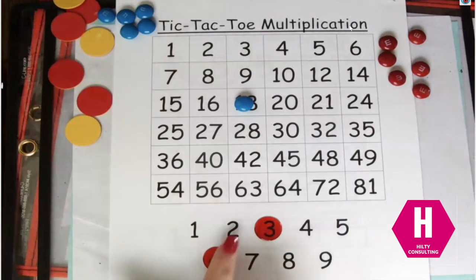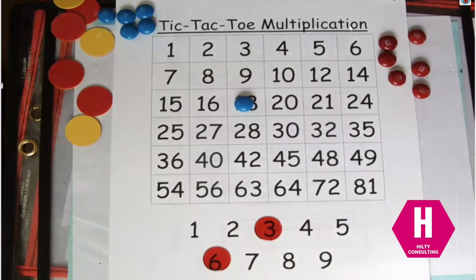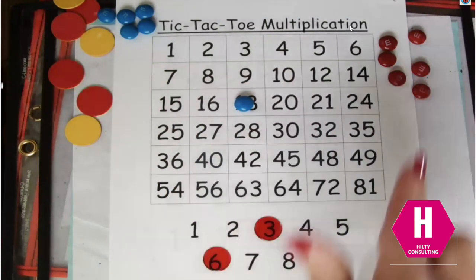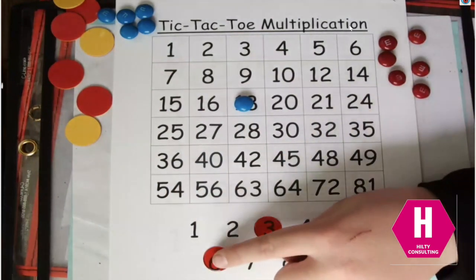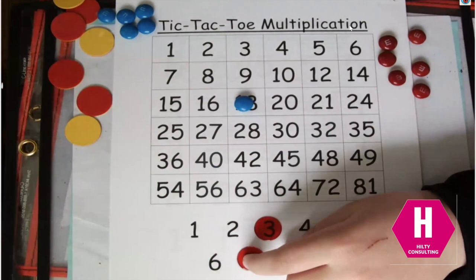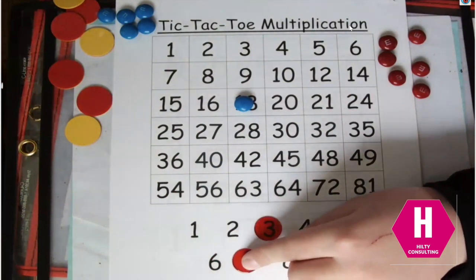Brett goes and he can only move one of those bingo chips. So down here Brett, you want to move one of those. You'll multiply your two new factors and then you'll put your counter over your product. You want to be the first one to get three of your color in a row to get Tic-Tac-Toe.